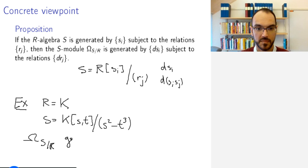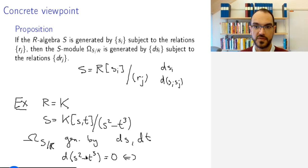The relation should be that d(s² - t³) equals zero. If you apply the Leibniz rule and additivity, you get the perhaps familiar formula 2s·ds = 3t²·dt.